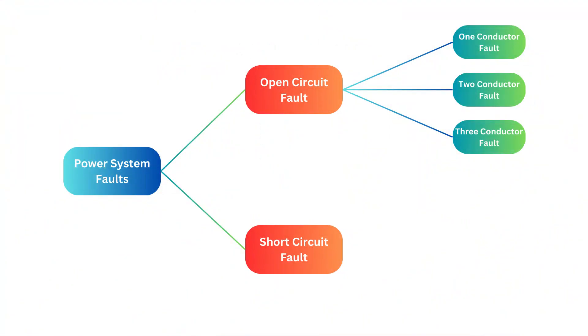Open circuit faults mainly occur due to the failure of one or more conductors. Since these faults occur in series with the line, they are also called series faults. Open circuit faults affect the reliability of the system and are classified into one conductor open fault, two conductors open fault, and three conductors open fault.